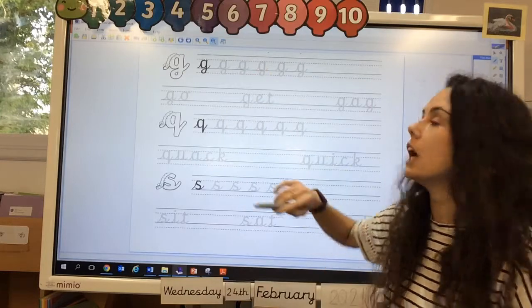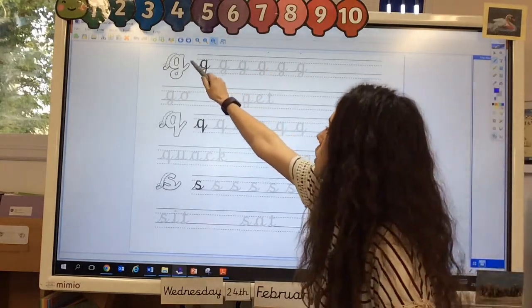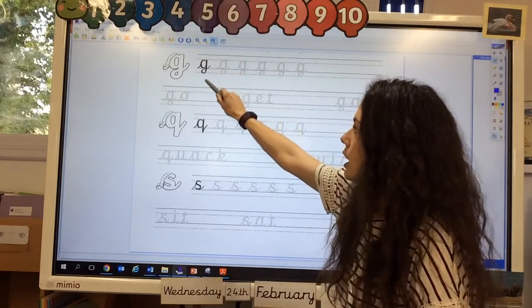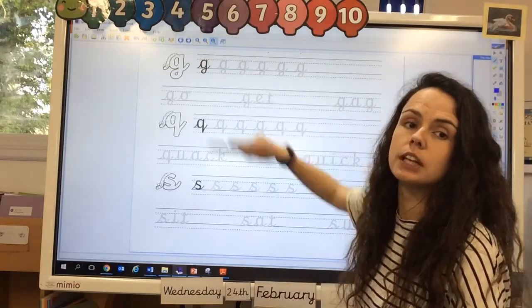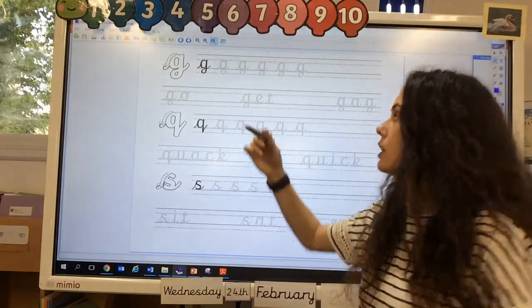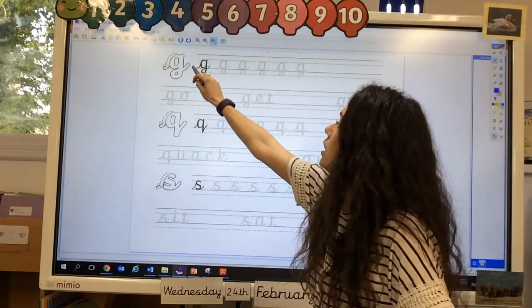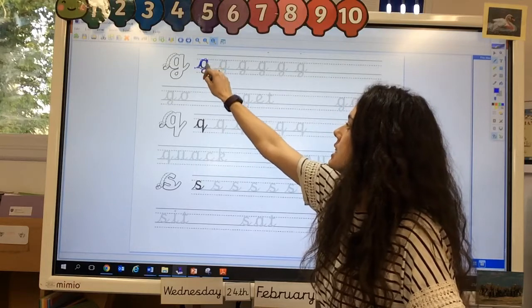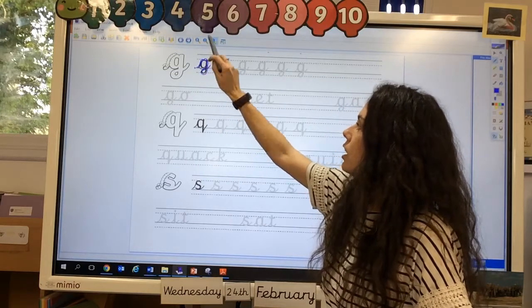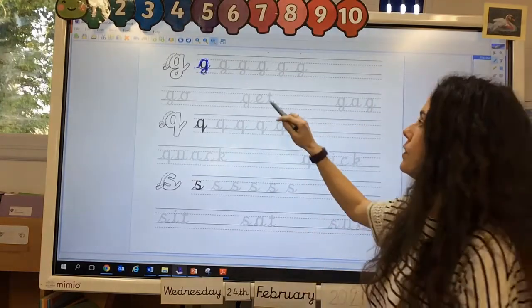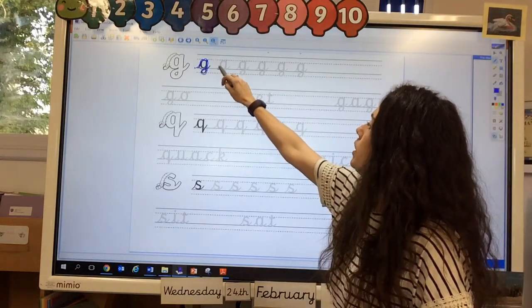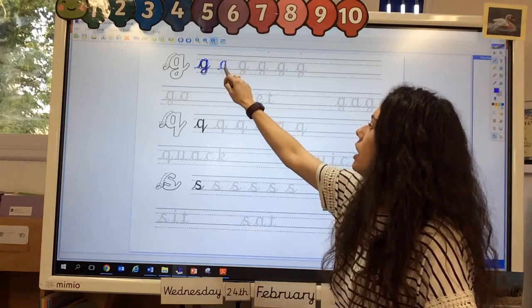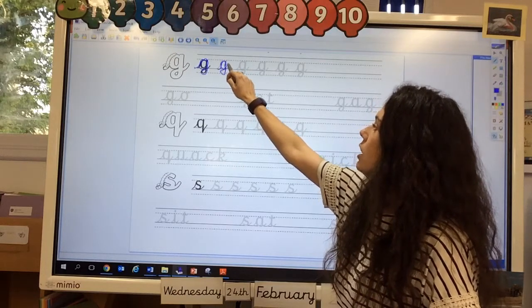Our G is, I'll show you on here. So you go up, around the girl's face, down her hair, and give her a curl. Okay, so let's try that together. So, up, around the girl's face, down her hair, and give her a curl. Let's try it again. So, up, around the girl's face, down her hair, and give her a curl. Oh, fantastic.